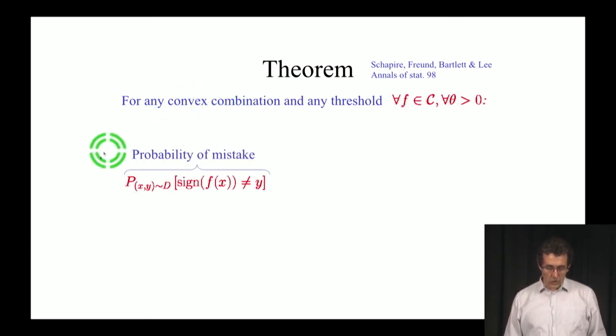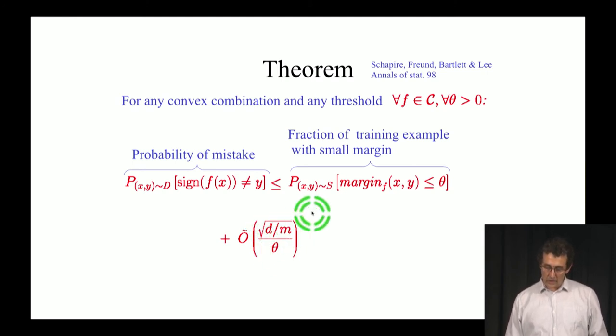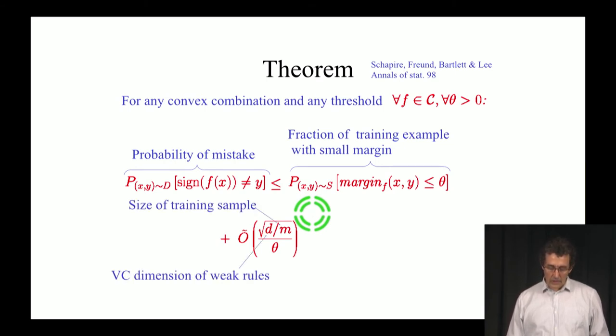What we have shown is that the probability of making a mistake with this rule, with the rule f, on the true distribution, is bounded by two terms. One term is the fraction of the training examples whose margin is smaller than theta. We don't have any examples with margins smaller than 0.5. Then, we have a term that depends just on theta and on some other parameters which are not critical at this point. These are the size of the training sample, and the VC dimension, and then the theta.